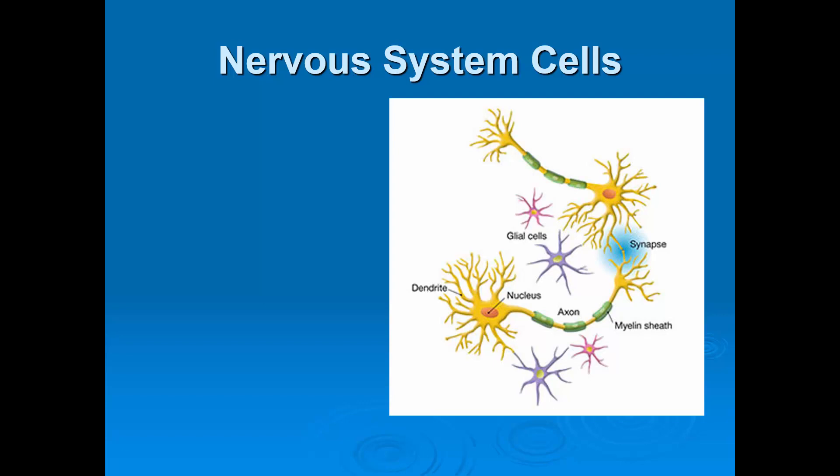There are essentially two cells you need to know in terms of the nervous system. Those cells are the neurons. The way you can think of a neuron, it's the basic cell of the nervous system. You can see them here in the diagram. Their essential job is that they're messengers, so they transmit messages throughout the body using electrochemical impulses.